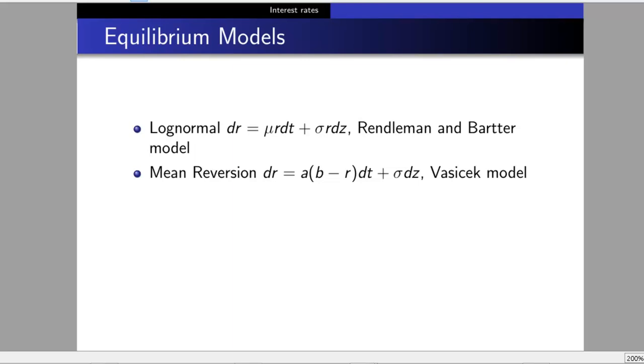The mean reversion model, dr = a(b - r)dt + σdz, is called the Vasicek model. The noise term is normally distributed, not lognormal. When the interest rate is higher than b, the trend term is negative, so rates head down. When lower than b, it's positive. That's typical mean reversion behavior, which is how interest rates normally behave economically.